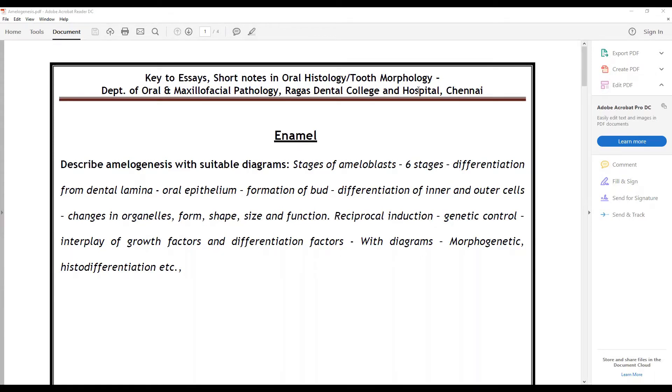You have to include essentially the six stages of ameloblast, right from where it differentiates from the dental lamina, formation of oral epithelium, how it changes to bud and bell, how there is inner enamel epithelium and outer enamel epithelium, changes in the organelles, form, shape, size and functions, the phenomenon of reciprocal induction, genetic control, and interplay.